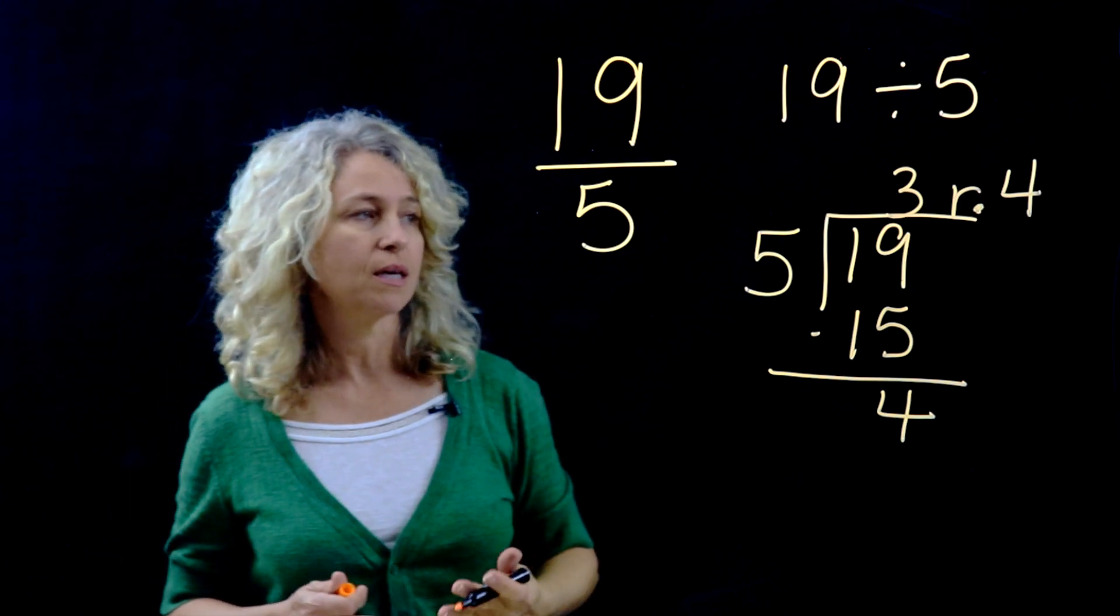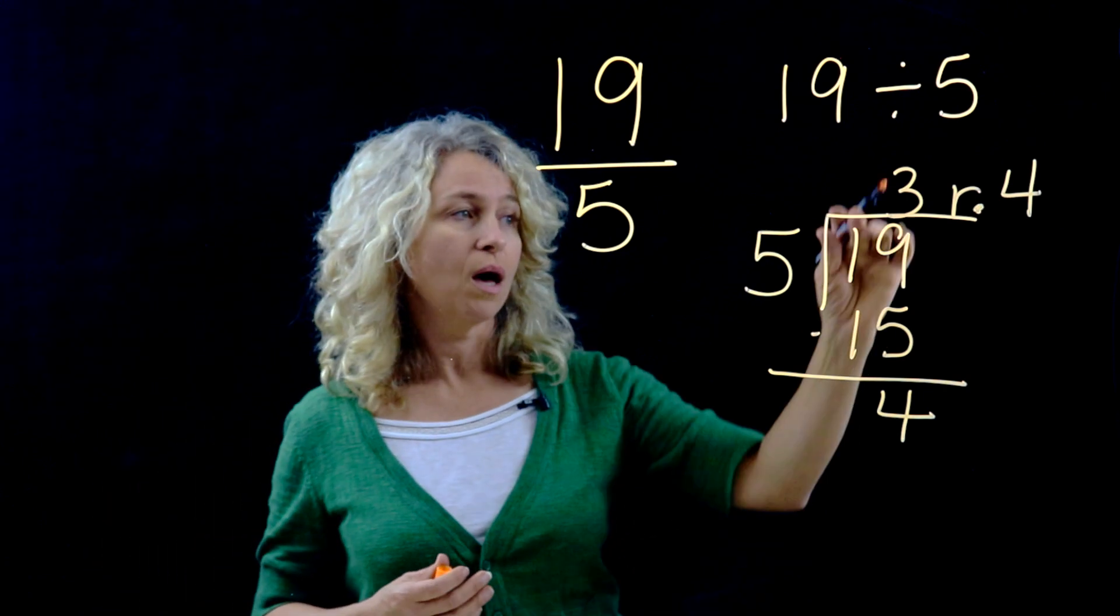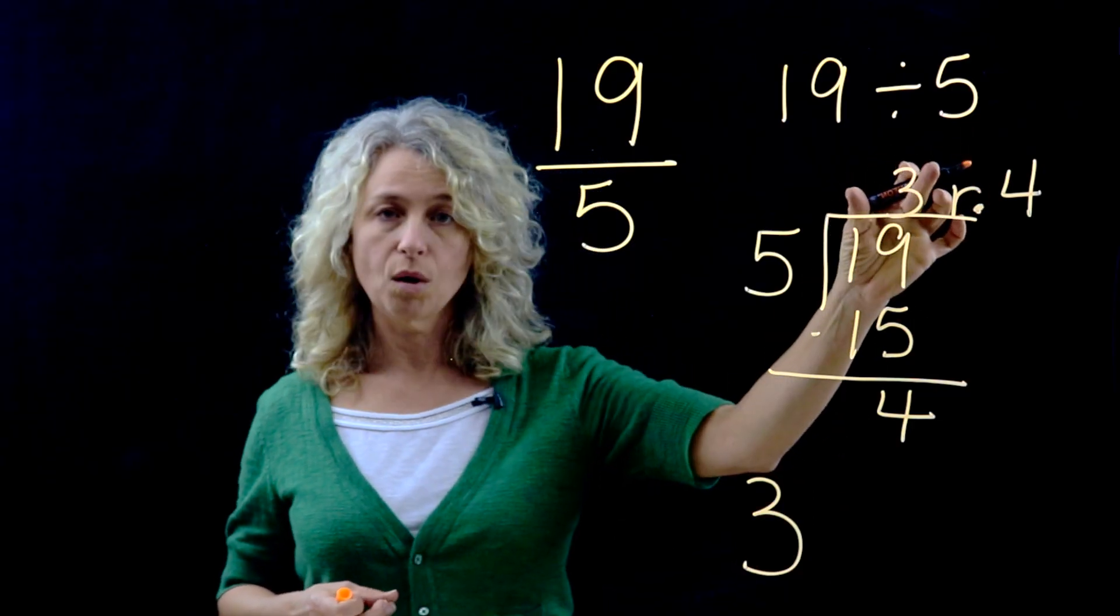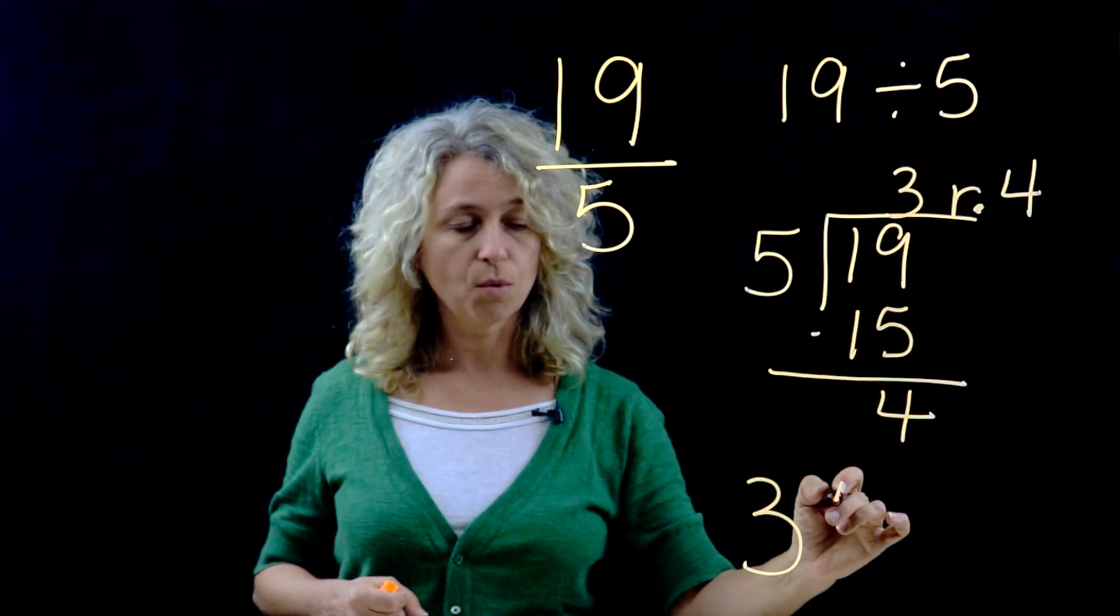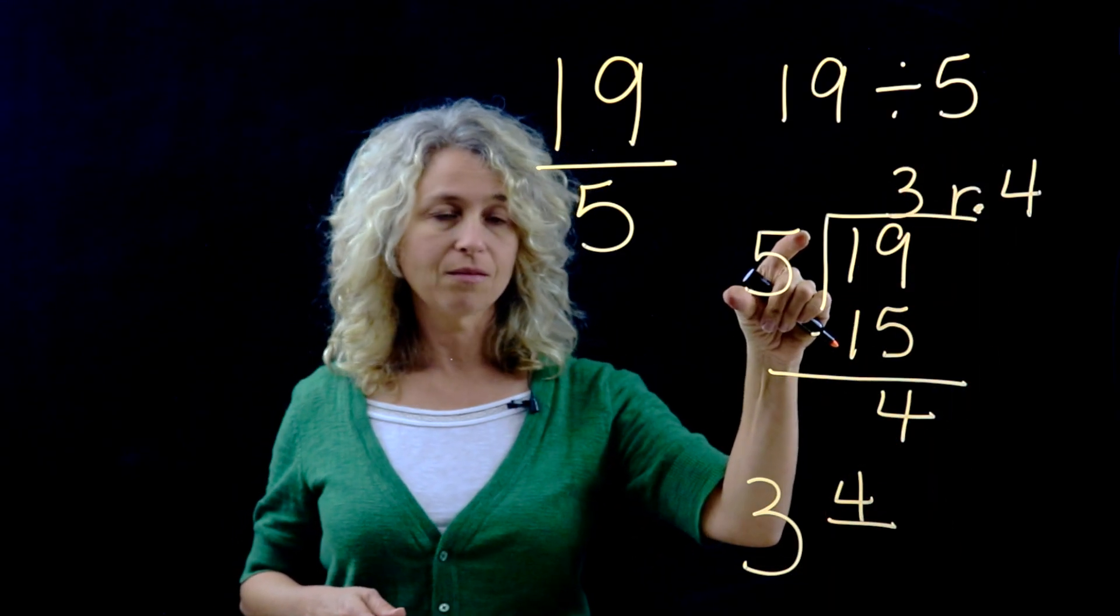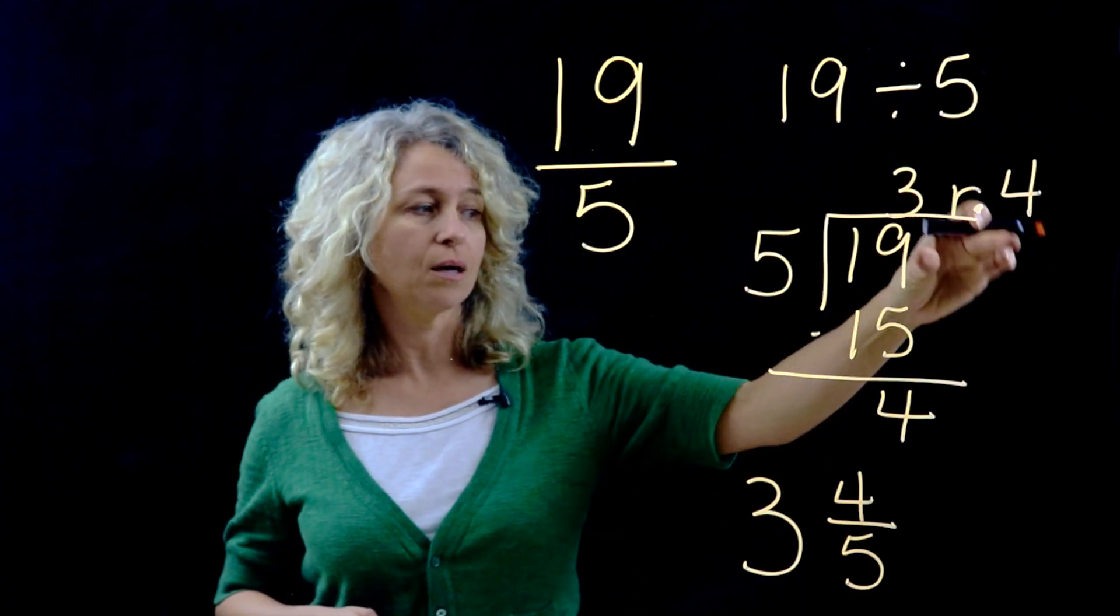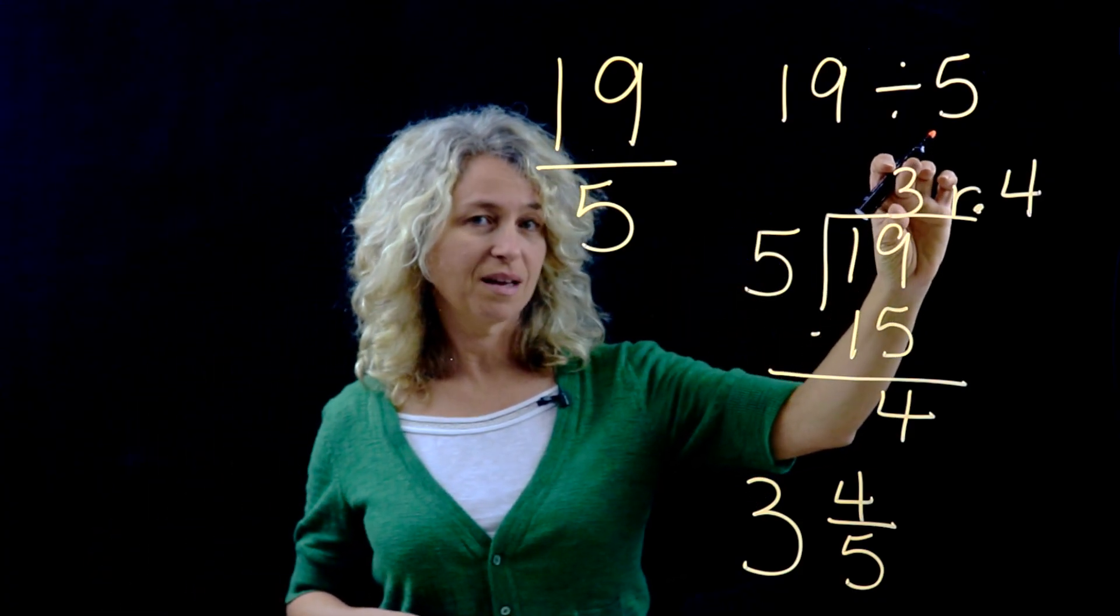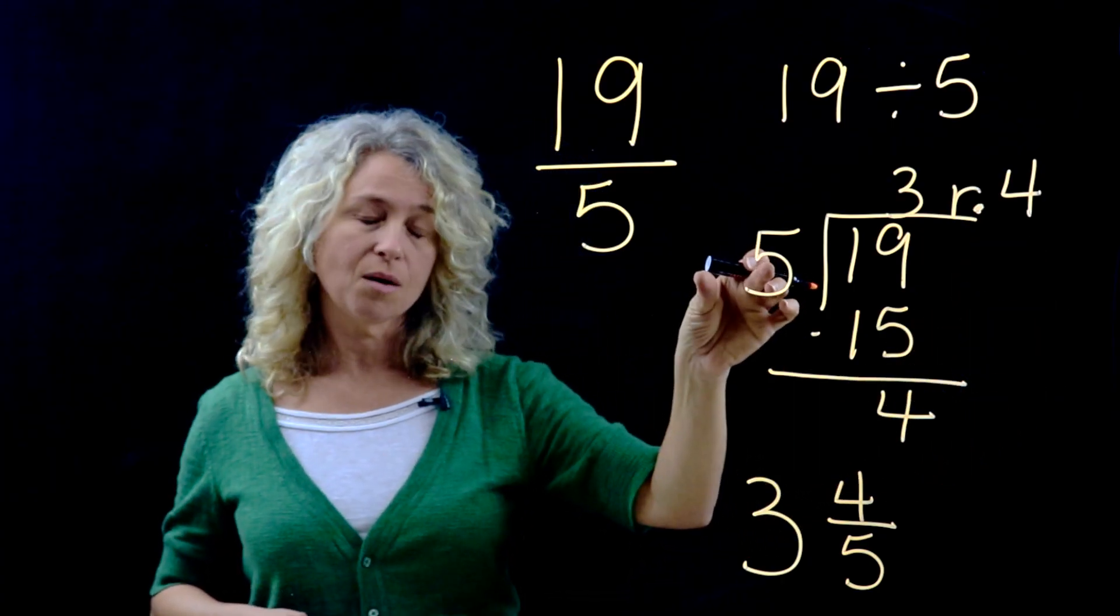Now 4 is your remainder. And so when you get good at this, you're going to be able to do this automatically, and you're going to know that your whole number is the quotient, 3, and 4 is your numerator, and 5 is the denominator. It's almost like going backwards, like the backwards C. Okay, and so that is a method that you can remember that will help you go a little quicker when you're changing these.